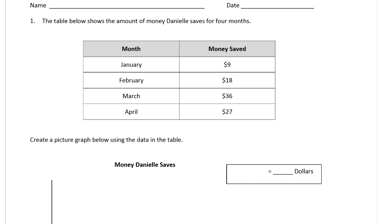The table below shows the amount of money Danielle saves for four months. Here are the months she saved: January, February, March, and April, and the money she saved for each month.